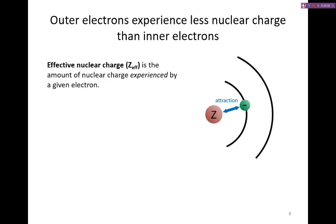This splitting of orbital energies within the shells is due to a phenomenon that we call screening. So to understand screening, we need to understand what Z-effective is. As I mentioned before, Z-effective is the amount of nuclear charge experienced by a given electron. It's what it feels, quote unquote.